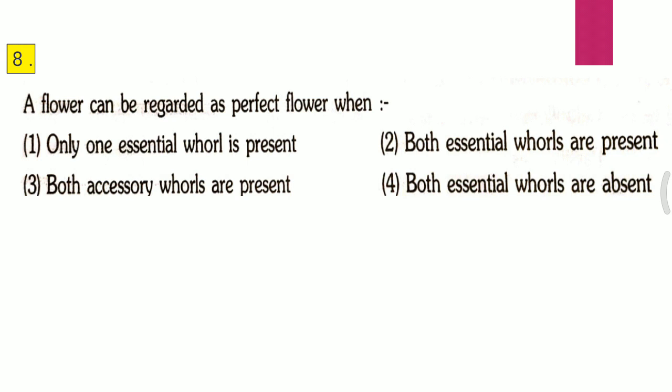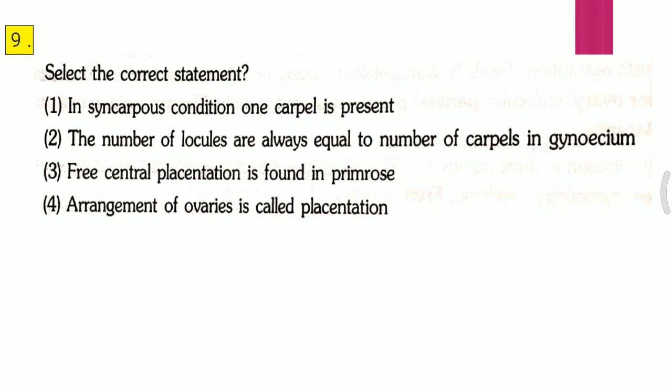Question eight: A flower can be regarded as a perfect flower when — first, only one essential organ is present; second, both essential organs are present; third, both essential organs are absent; fourth, both essential organs are absent. The correct answer is the second one, that is both essential organs are present.